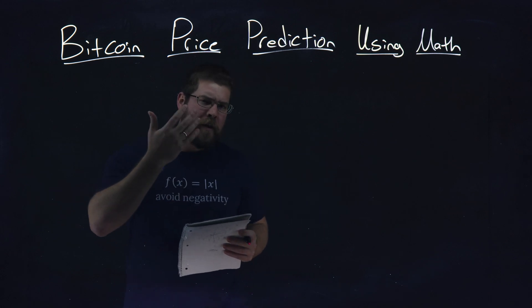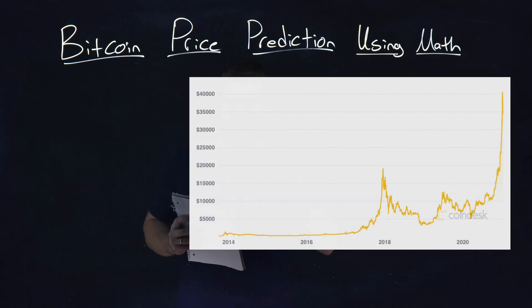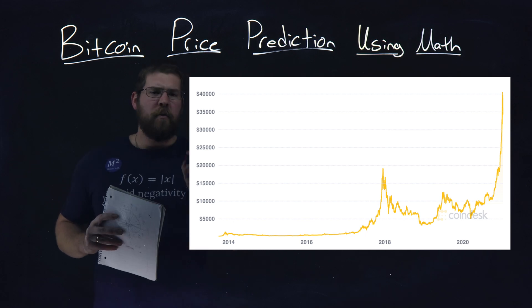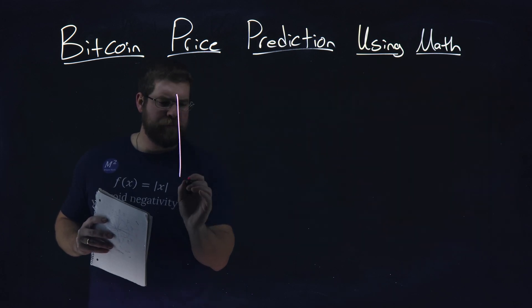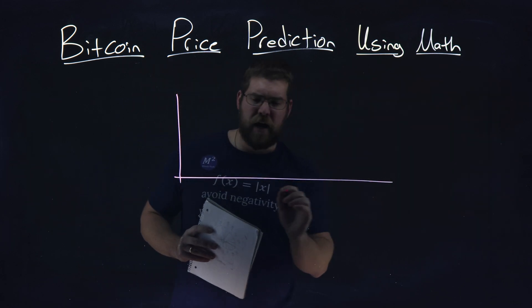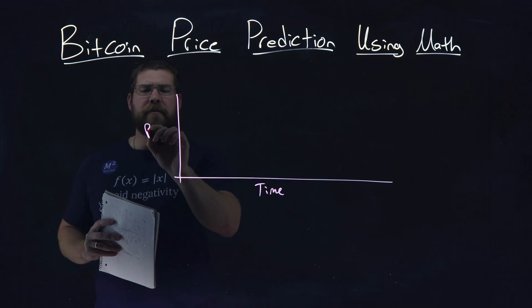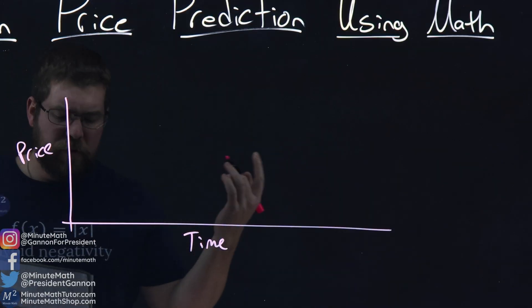So, one thing you've noticed, hopefully, when you've seen the Bitcoin graph over time, we have its price here, and we have time. So time here, and we have a price.